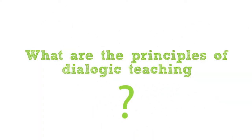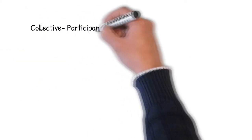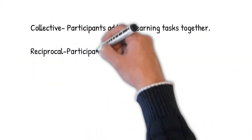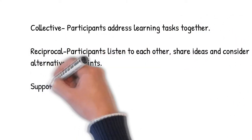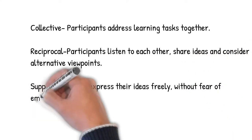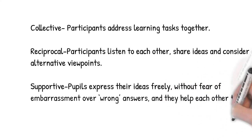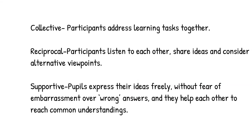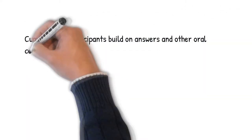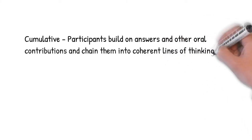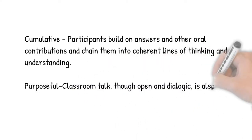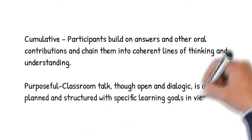What are the principles of dialogic teaching? Whatever kinds of talk are on offer, teaching is more likely to be dialogic if it is: collective — participants address learning tasks together; reciprocal — participants listen to each other, share ideas, and consider alternative viewpoints; supportive — pupils express ideas freely without fear of embarrassment, helping each other reach common understandings; cumulative — participants build on answers and chain them into coherent lines of thinking; and purposeful — classroom talk is planned and structured with specific learning goals in view.